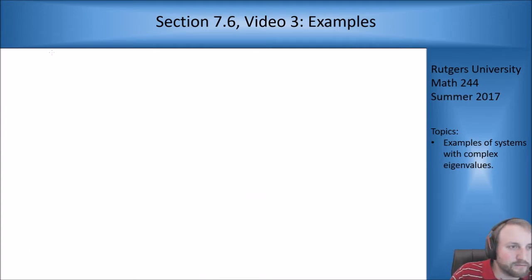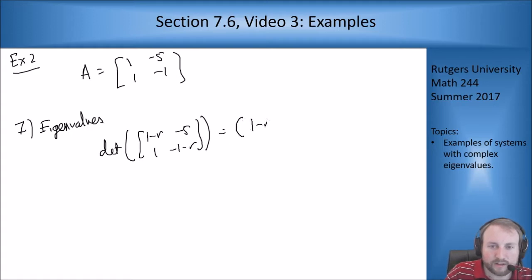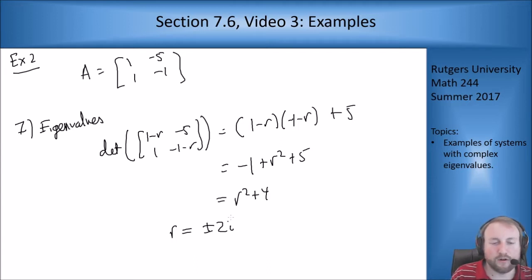Now for the second example. Alright, so the matrix we want for this one is 1 minus 5, 1 minus 1. Good. So step 1 is look for eigenvalues. Determinant of 1 minus r, minus 5, 1, minus 1 minus r equals 1 minus r, negative 1 minus r plus 5. This turns into negative 1 plus r squared plus 5. So r squared plus 4, which means our roots, our eigenvalues are plus or minus 2i.